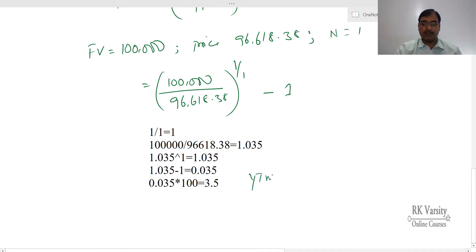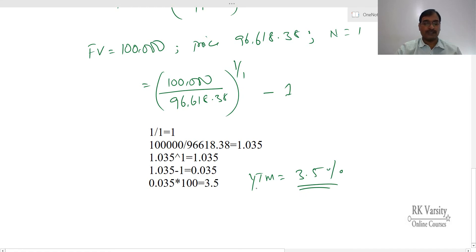Your yield to maturity is 3.5% on this zero coupon bond. Thank you.